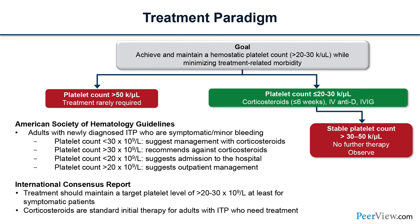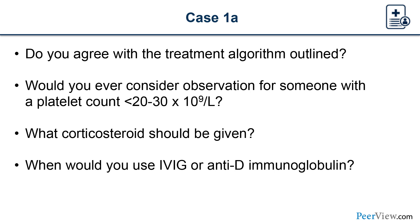The international consensus report says treatment should target maintaining a platelet count between 20,000 and 30,000 for at least symptomatic patients, with corticosteroids remaining the standard first-line therapy. In patients with contraindications to corticosteroids or who need a more rapid response, we can use anti-D immunoglobulin or IVIG. Key questions include: when to consider observation, whether to use prednisone or dexamethasone, and the role of IVIG and anti-D.